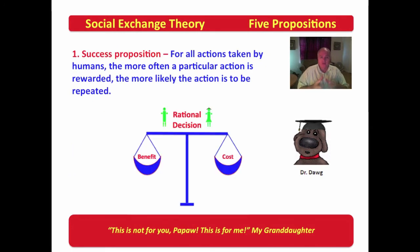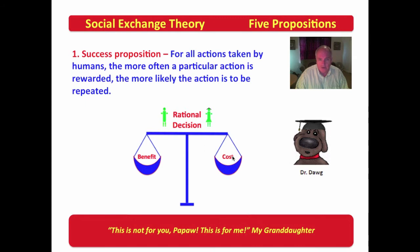The success proposition is the idea that for all actions taken by humans, the more often a particular action is rewarded, the more likely the action is to be repeated. If an individual takes an action and the benefit outweighs the cost repeatedly, that action is very likely to be repeated. Conversely, if the cost consistently outweighs the benefit, the action is less likely to be replicated.